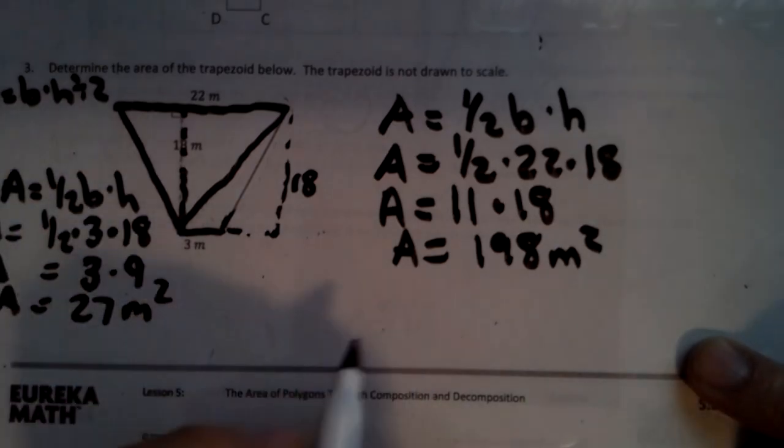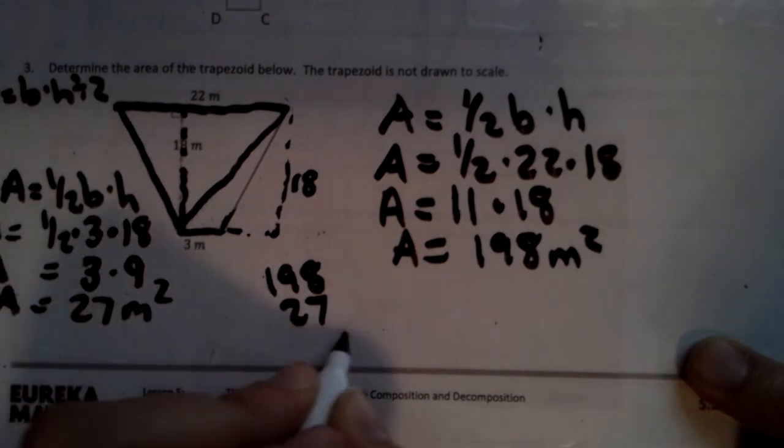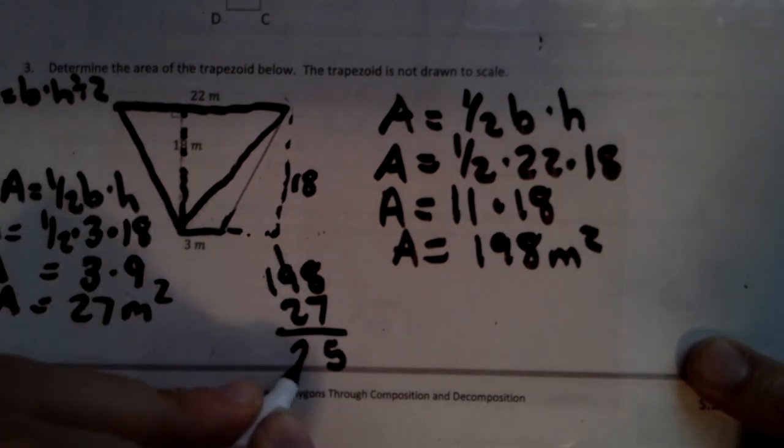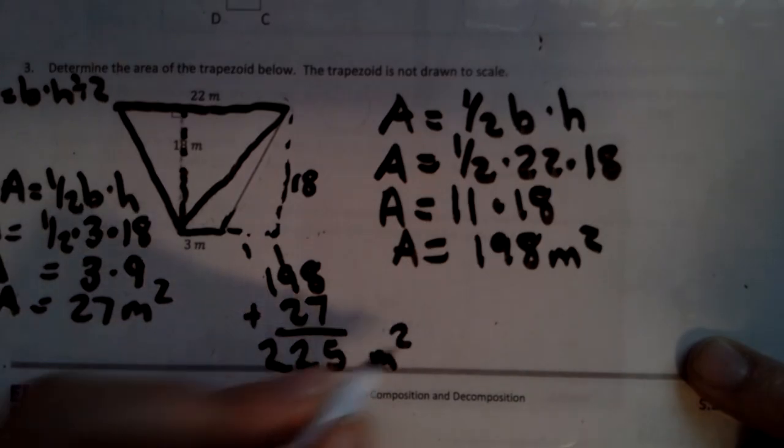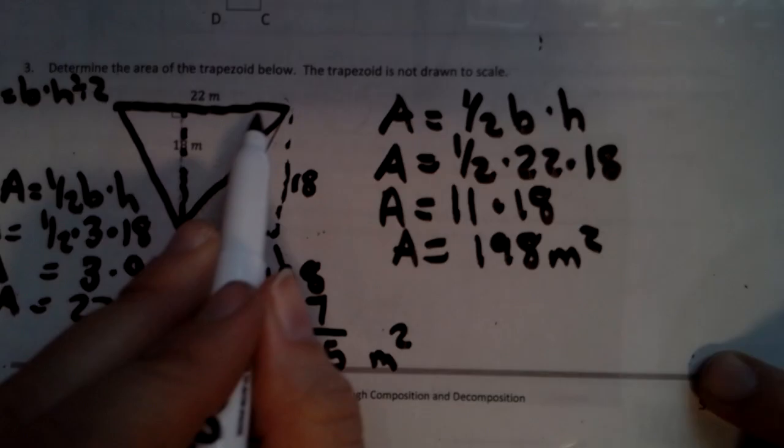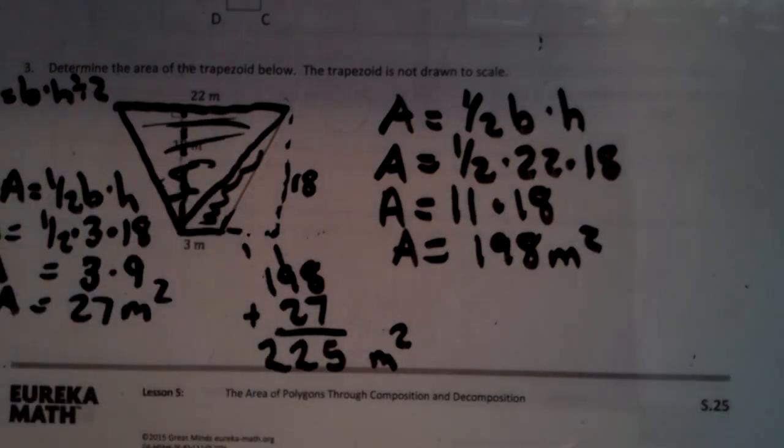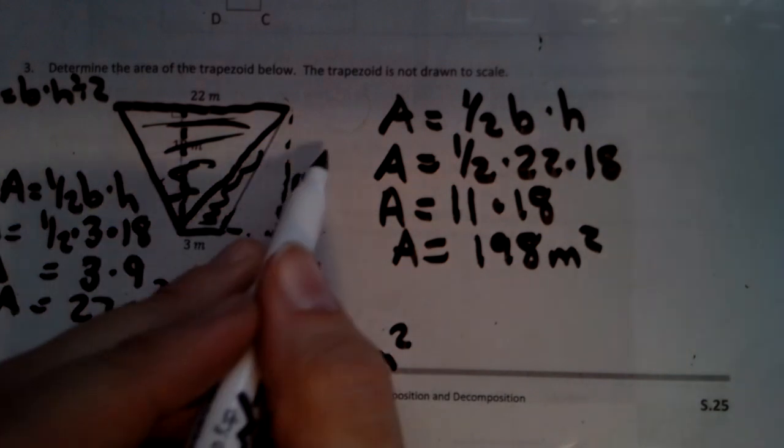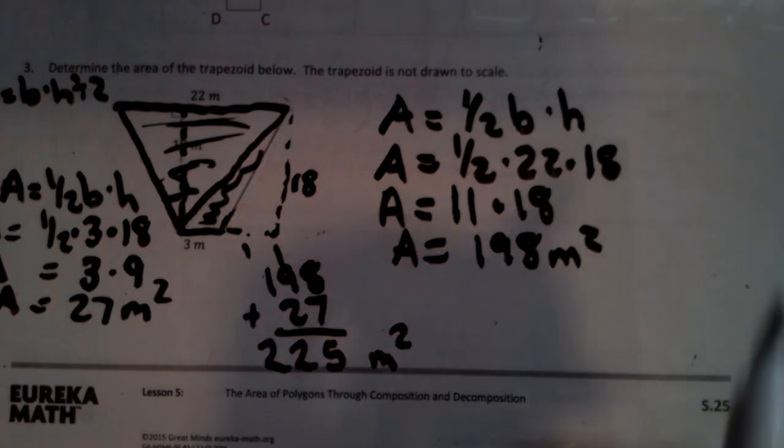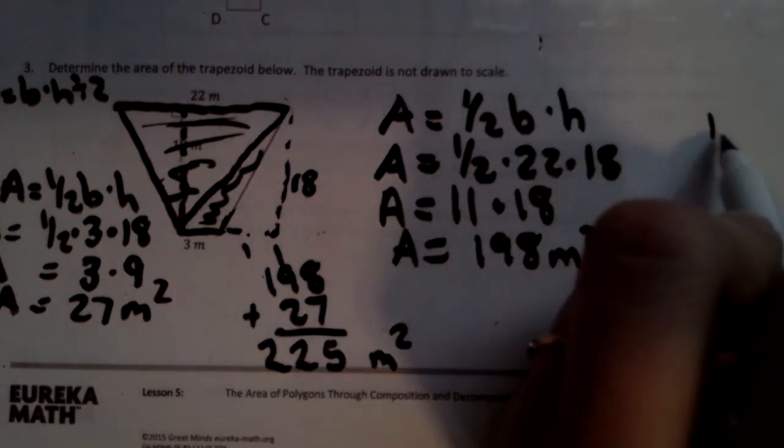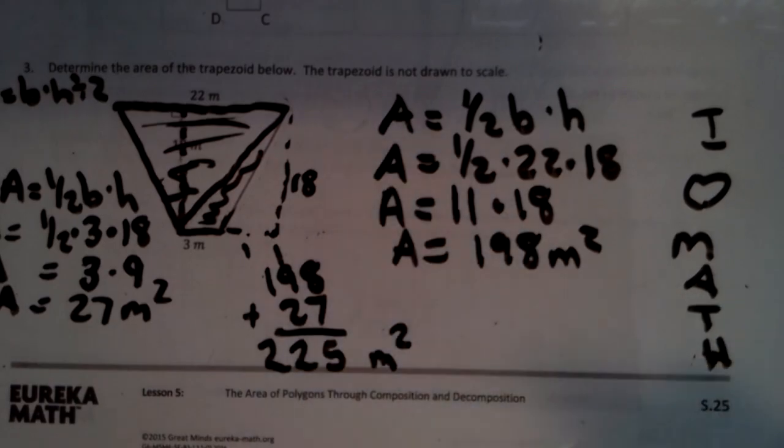I've got to put these two together. So I've got 198 and 27. 225 meters squared for the 198 of this big triangle and then this little triangle over here, all put together. And this, remember, was just for my height. All right, and as always, this is Mrs. Bobby and I love it. There you go.